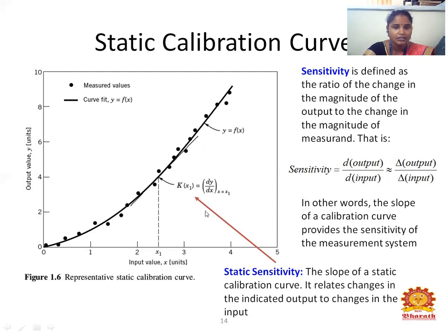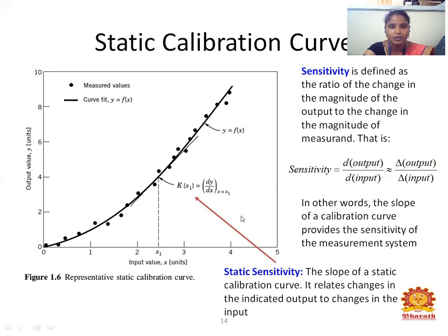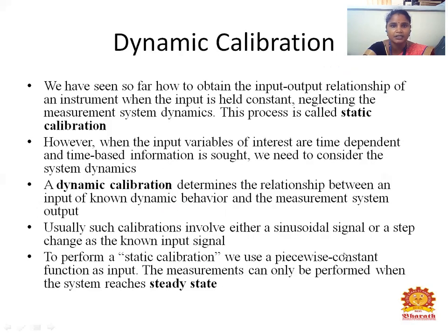This is the calibration curve. The x-axis is the input value and y is the output value. The dotted line indicates the measured value. The straight line curve fits y = f(x). Here, the sensitivity at x = x1 is equal to dy/dx — the change in output per unit change in input at that point. This graph represents the static calibration curve.